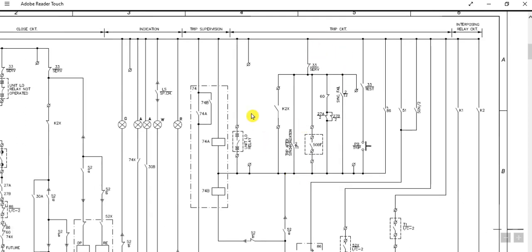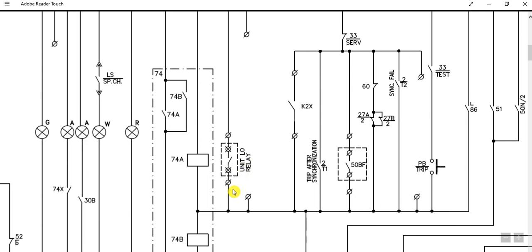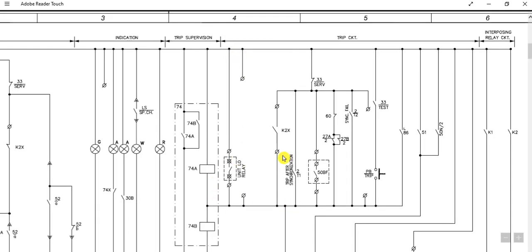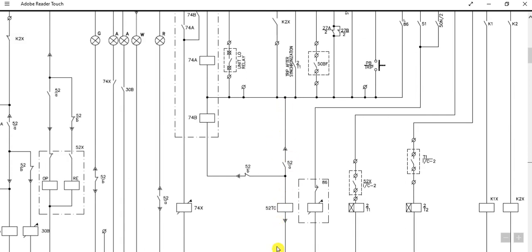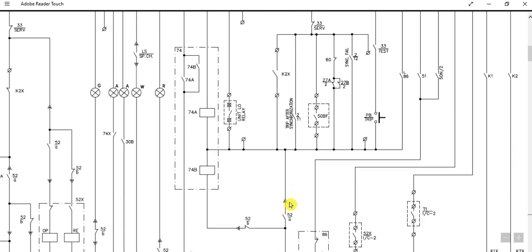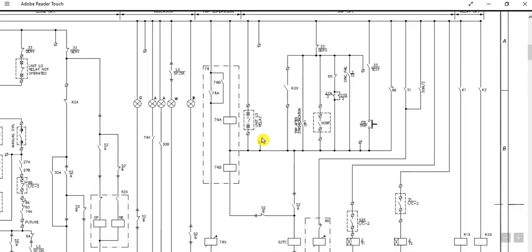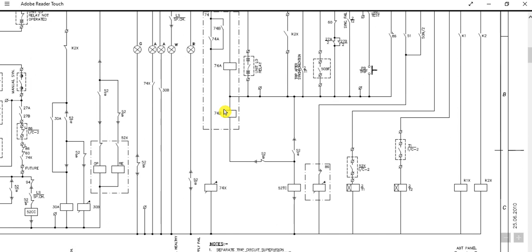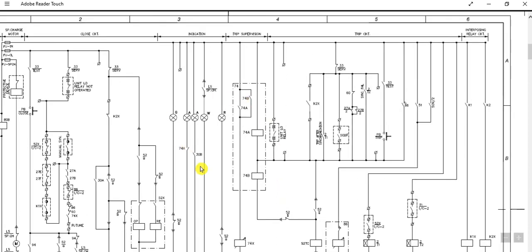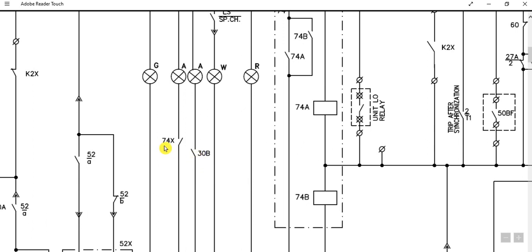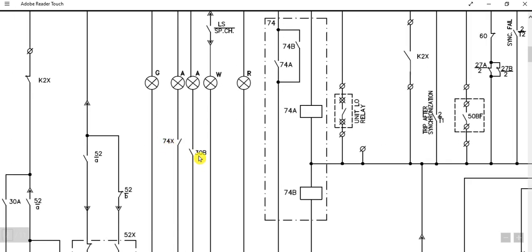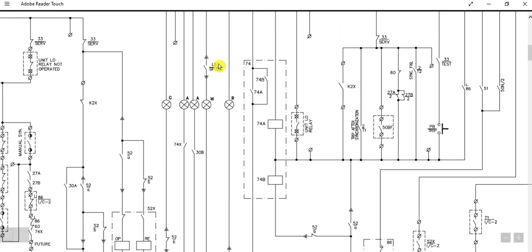Here is another path — this is the unit lockout relay. If it is operated, this path will be through and the circuit breaker will be tripped. Here, 74 is the trip circuit supervision relay. 74A and 74B contacts are also available through this trip circuit supervision relay — the circuit breaker may get tripped. With the help of auxiliary contacts from the trip circuit supervision relay, this 74X 30B, with the help of these auxiliary contacts and limit switch, these are the indication circuits.